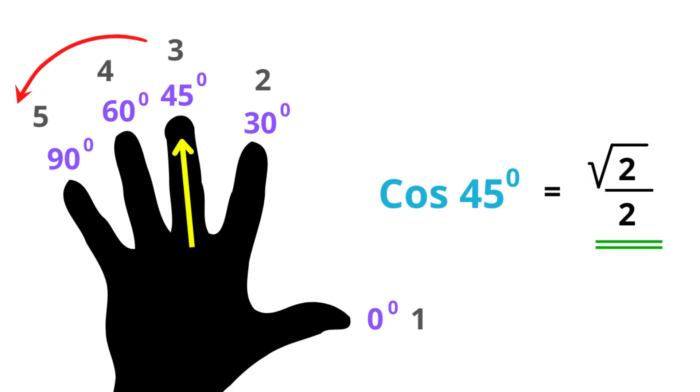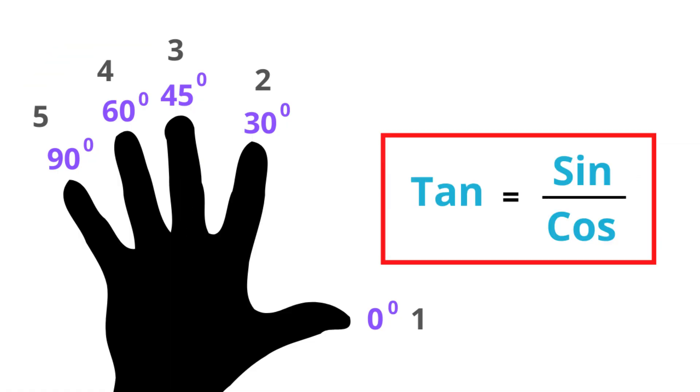Now you may be thinking how do we get tan? It's fairly simple too. You know tan equals to sine over cos, right? So as long as you know the sine and cos you can get the tan.